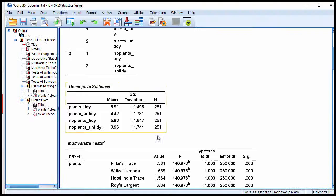So this t value is statistically significantly larger than this t value. So from an interpretation perspective, the difference between plants tidy and no plants tidy is statistically significantly larger than the comparison associated with plants untidy and no plants untidy.